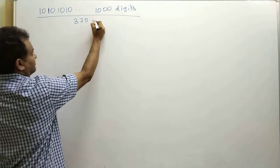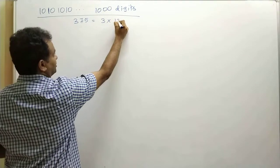Here 375, if you observe, this is a composite number which can be written as 3 into 125.